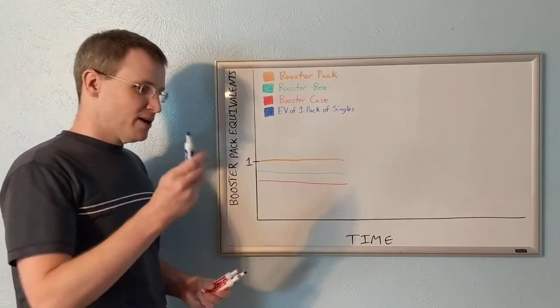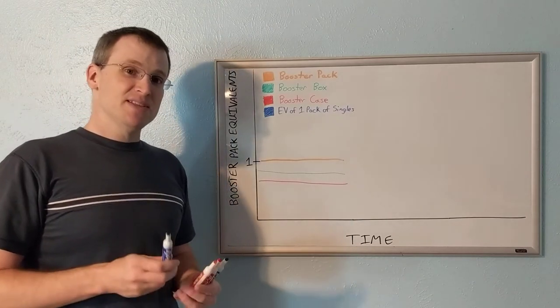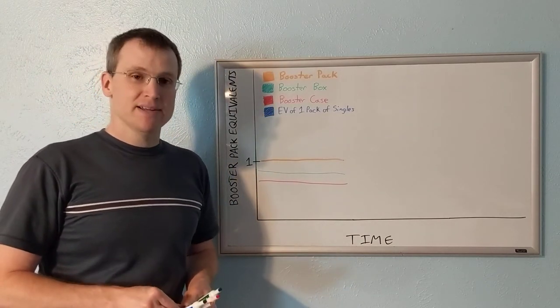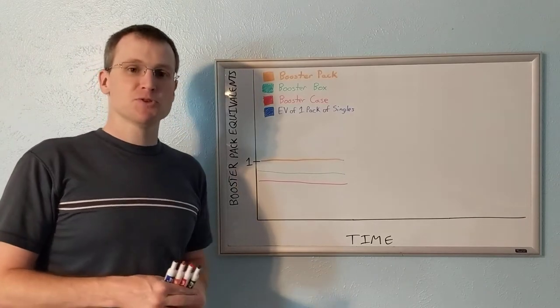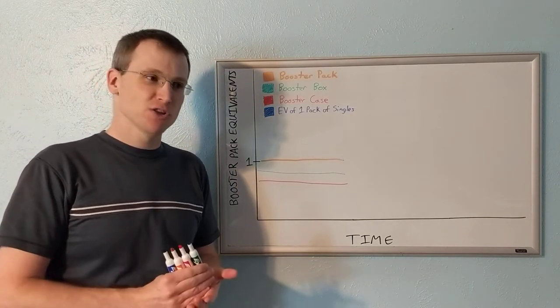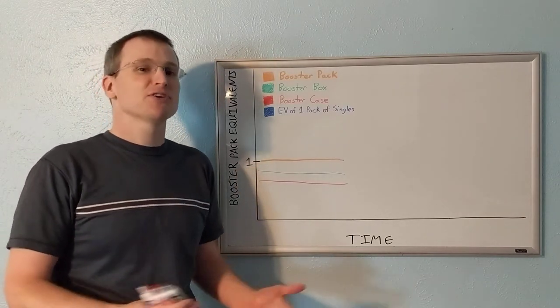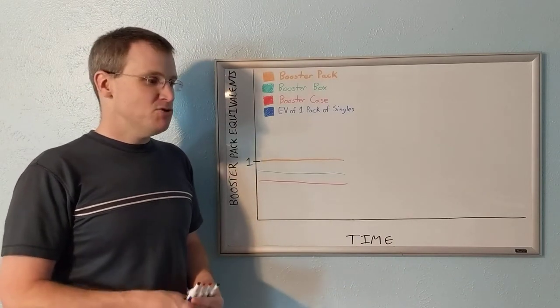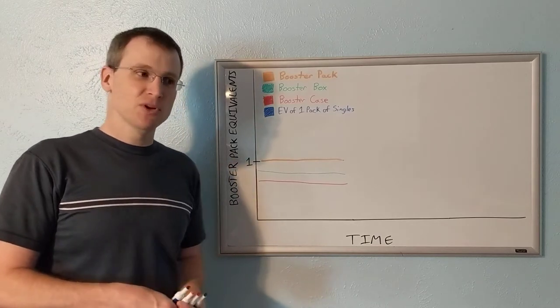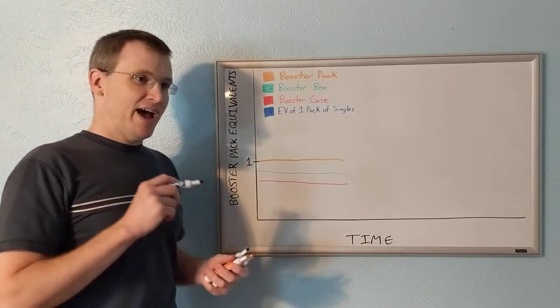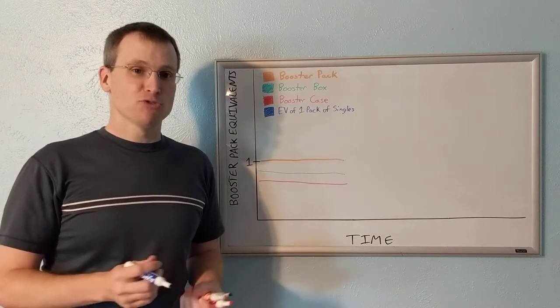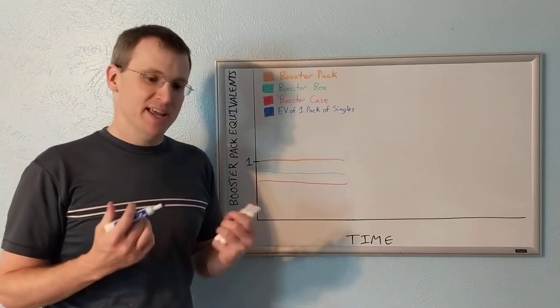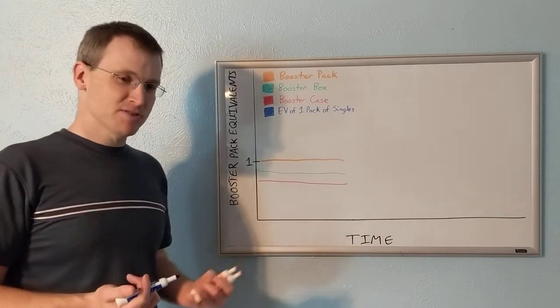Now the blue line I'm going to draw, this is going to be the expected value of one pack of singles. And the thing you really have to keep in mind here, if you open one booster pack of Commander Legends and you draw the foil-jeweled Lotus, well congratulations, don't buy a lottery ticket because you've used up all your luck for the rest of your life. But you can't use that kind of example for this. You need to use the average expected value over hundreds, thousands of booster packs. If you were just to open any random booster pack, what would its value be?